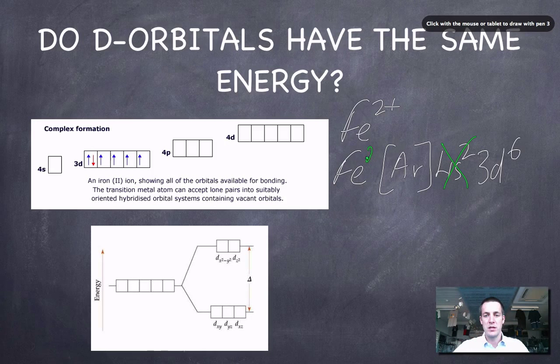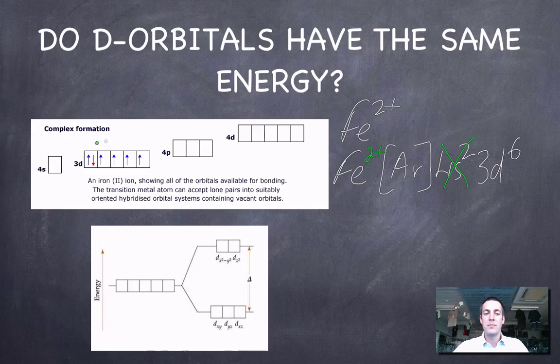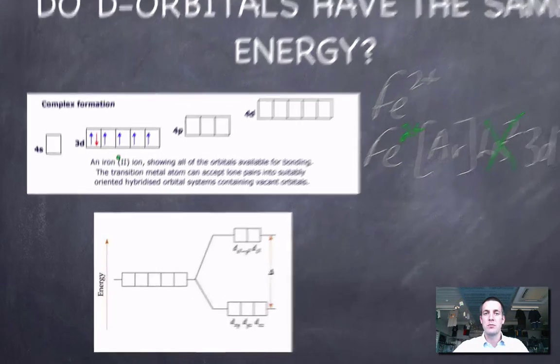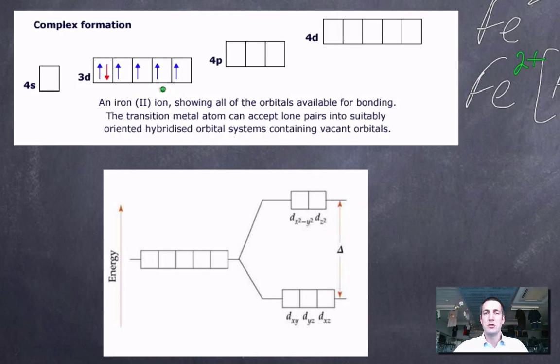It's going to have a 2+ charge now, and it's going to have 6 d-electrons. Now you might remember that the electrons within a subshell will all have the same energy. They're called degenerate. This is true, but it ceases to be true when ligands approach a metal ion.